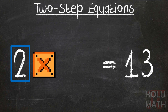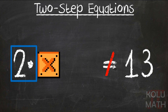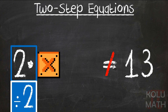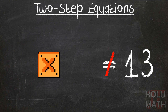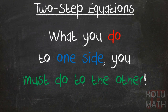Now, what about that 2 in front? Remember that 2 is really a times 2. And dividing by 2 will cancel that out, and we'll get x equals something. But wait — what's that slash? Oh, we did something wrong. Our rule: what I do to one side, I must do to the other.